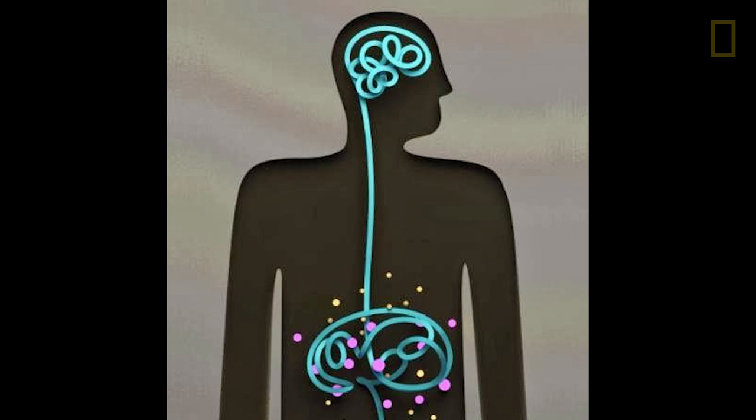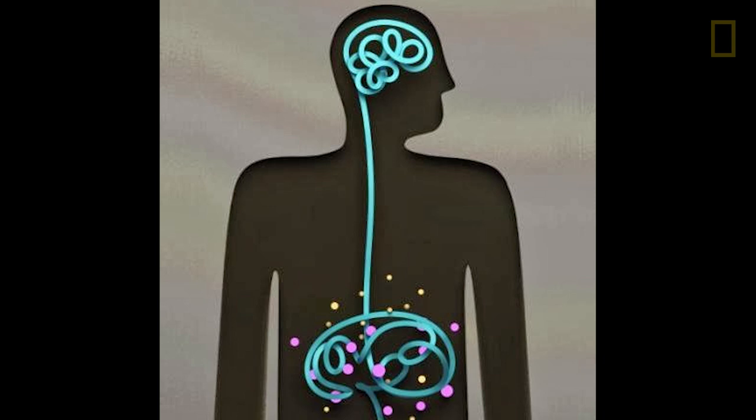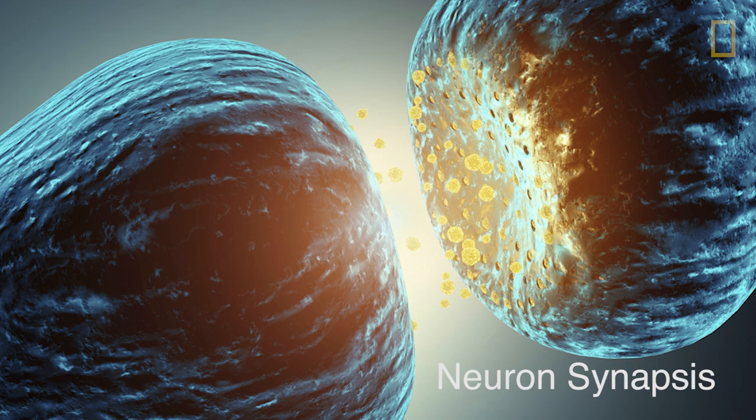My lab in particular is interested in how these microbes, aside from affecting digestion and immunity and metabolism, can influence the brain and behavior. One thing that's really important to note is that the brain itself is a very complex organ, and the brain doesn't act in isolation — it responds to the needs and experience of all our other body sites. The microbiota, as an important organ, turns out to feed into brain and behavior as well.